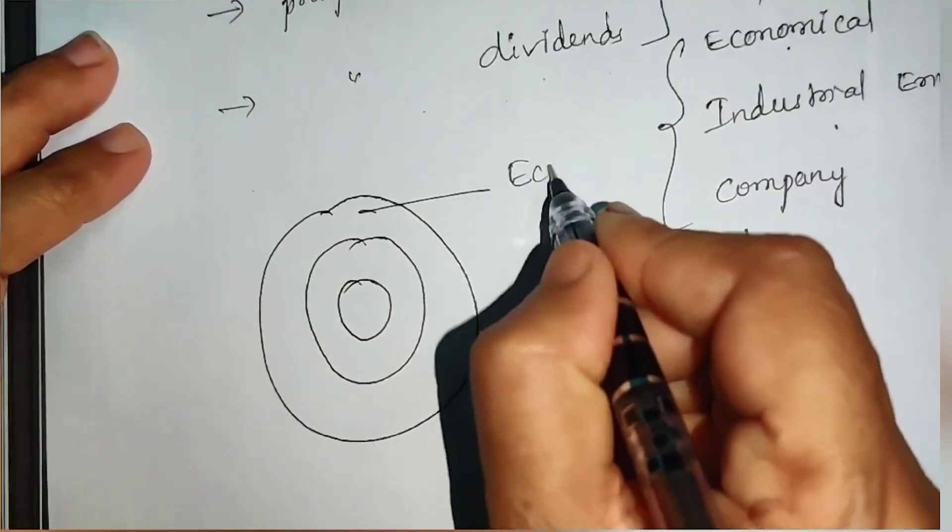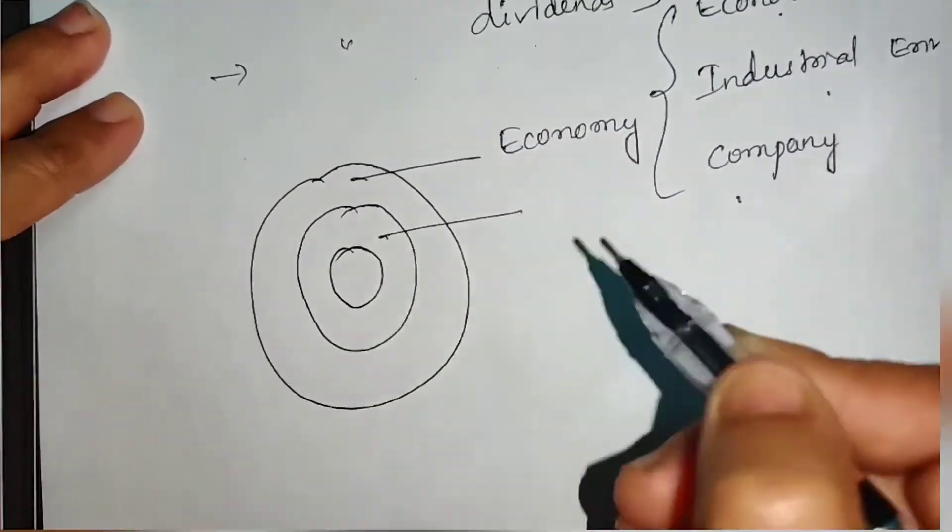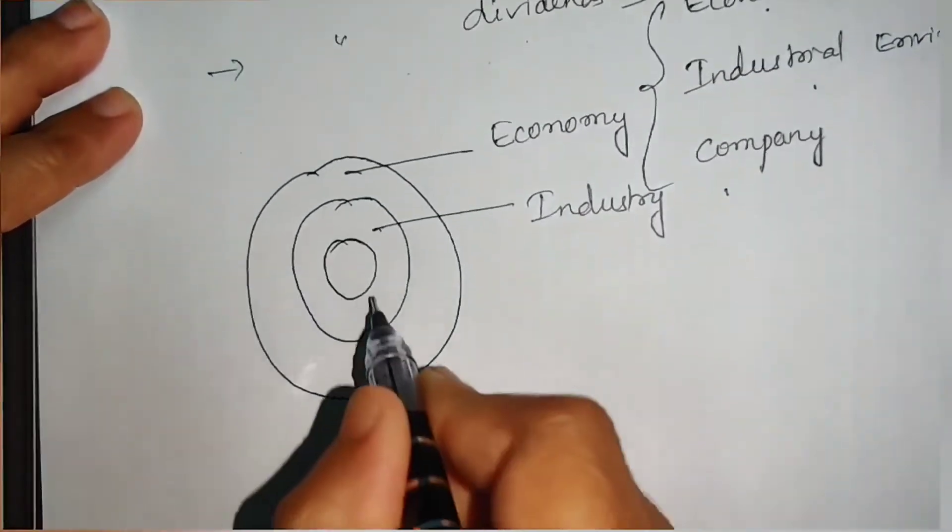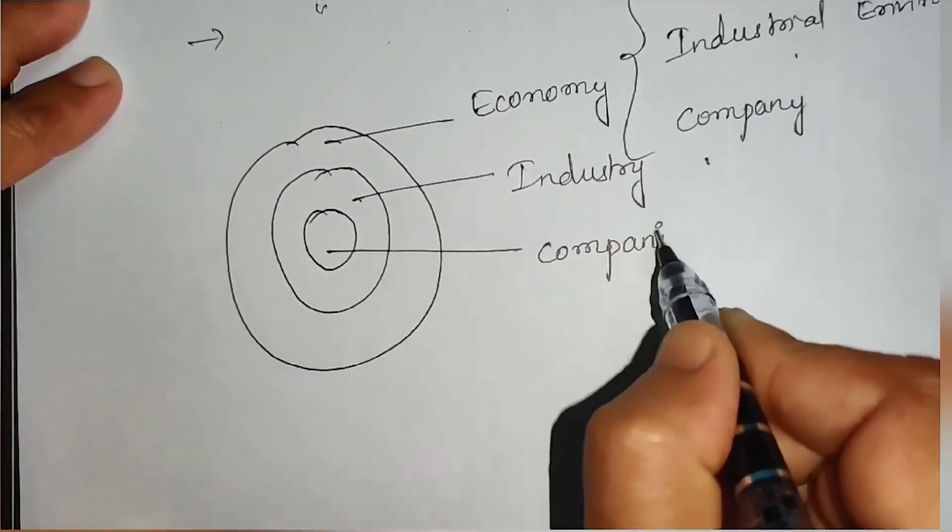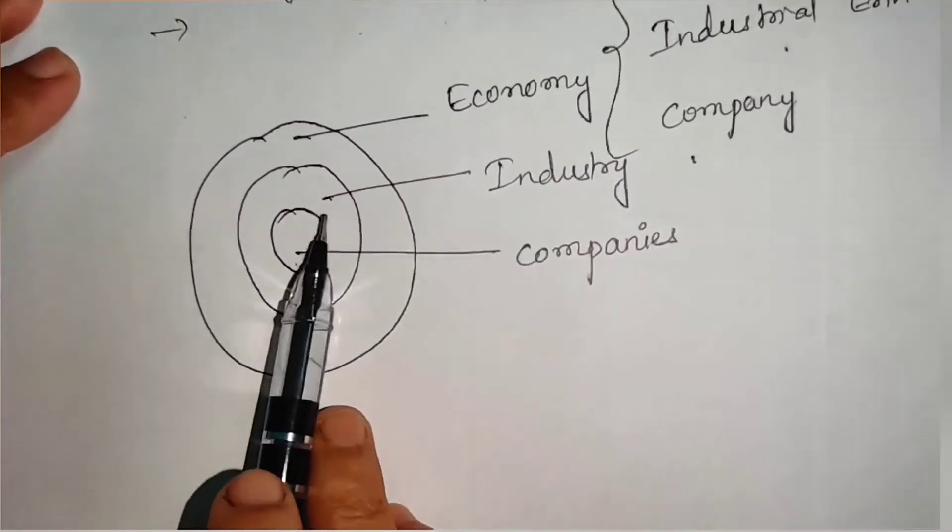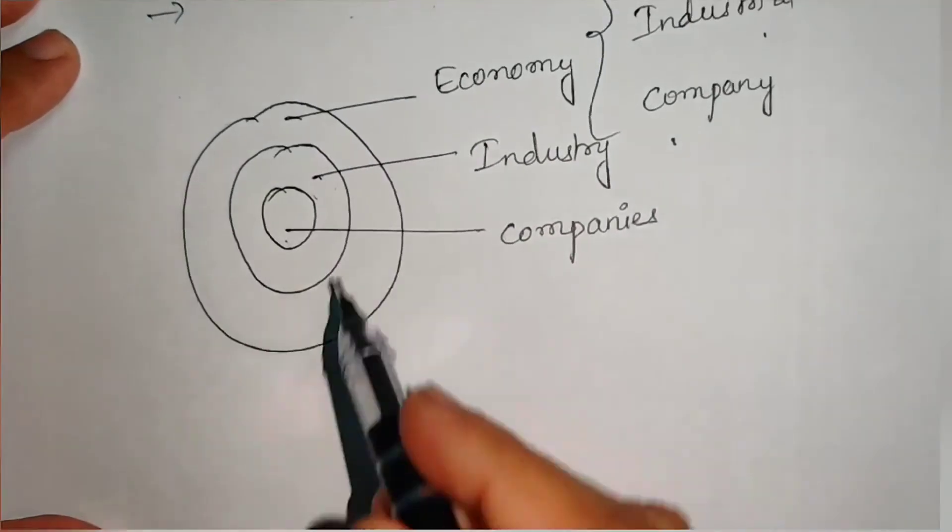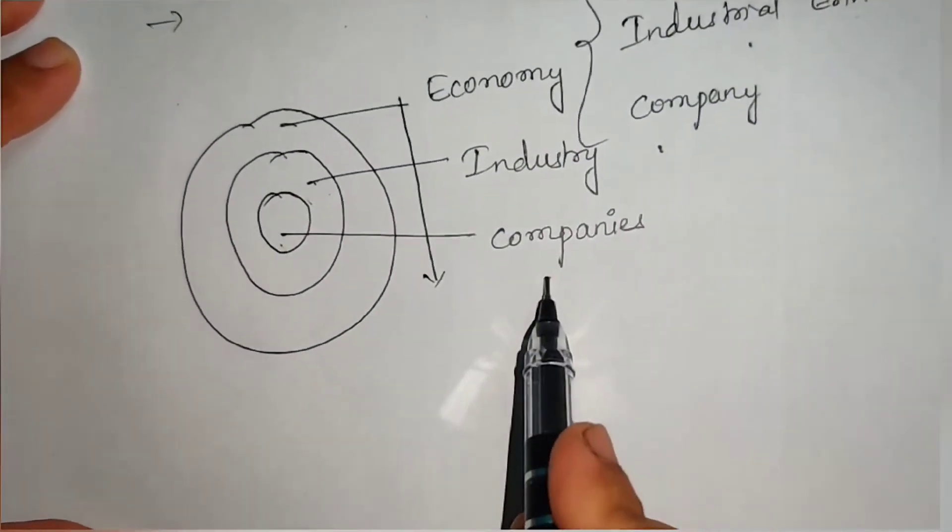The broader one is economy as a whole. Economy is a combination of group of industries, and industry is a group of combination of companies. Group of companies form industry, group of industries form economy.